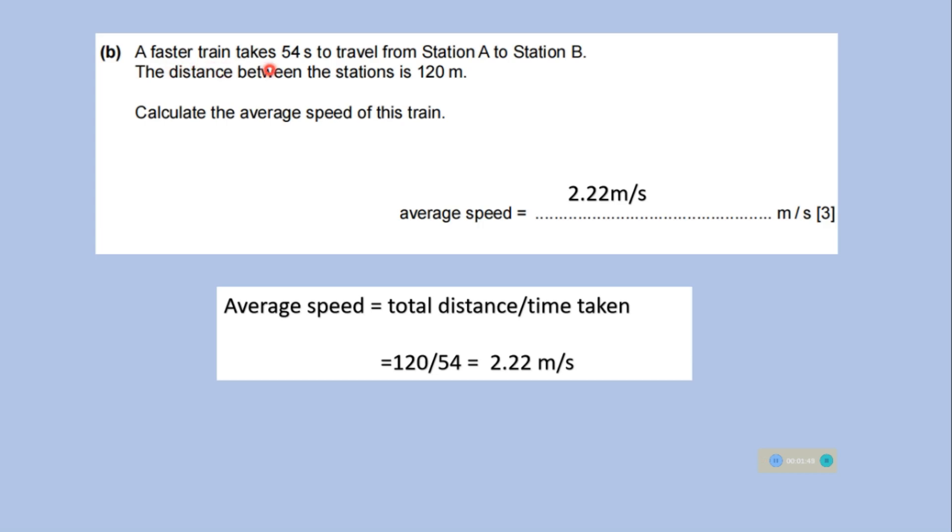A faster train takes 54 seconds to travel from station A to station B. The distance between the station is 120 meter. Calculate the average speed of this train. So average speed is total distance divided by time taken. Time taken in covering that distance. So the distance is 120 meter and time taken is 54 seconds. So average speed is 2.22 meter per second.